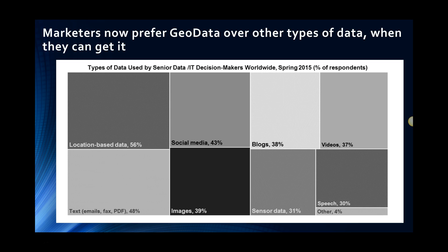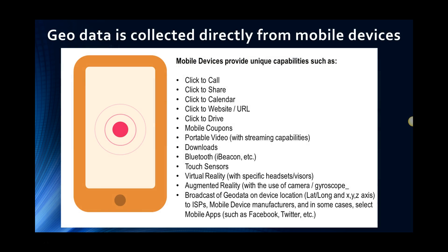This third-party data can get down to the individual account level — you can find a social media handle because they're posting what they're looking at, and you know what they like by looking at all the images they post. The device itself is giving you metrics customized to mobile: click-to-call, click-to-share, click-to-drive, mobile coupons, Bluetooth, iBeacons, touch sensors, augmented reality, and so on. As a mobile marketer and mobile analyst, there's a lot to think about here. It's all blurring now.